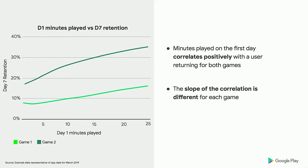Looking at two different games on Google Play, the trend holds for both — the longer they spend on their first day, the more likely they are to return. But the engagement experience across these two games is different: while both relationships are positive, the increase in return rate differs. This is driven by things like onboarding and different core loop designs. Game two might be doing a much better job of onboarding users and showing them which engagement action drives fun, resulting in stronger retention relative to game one.